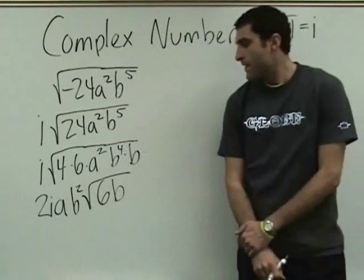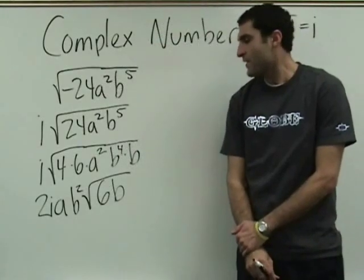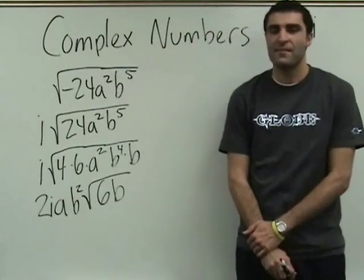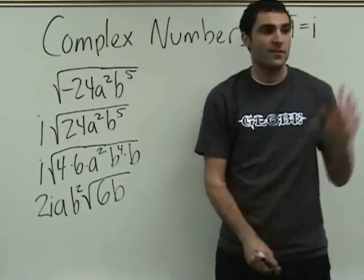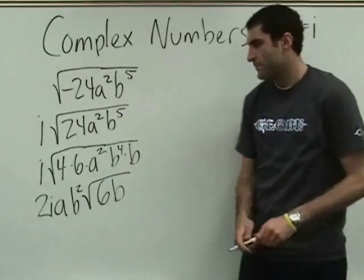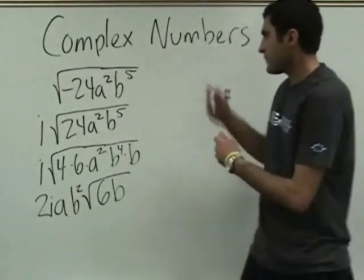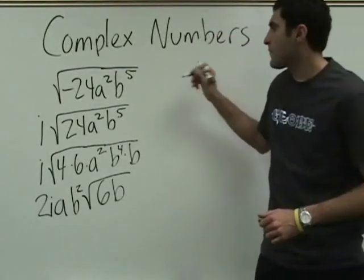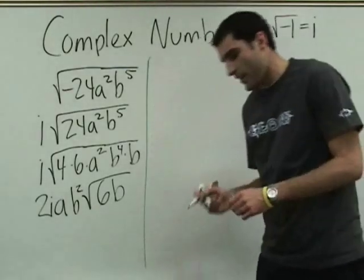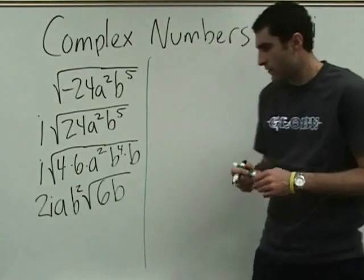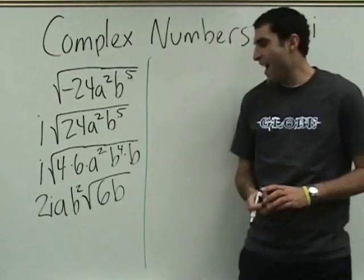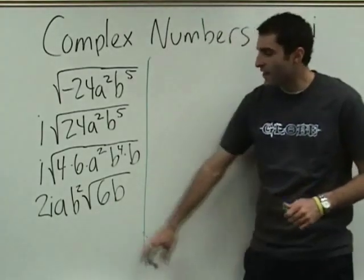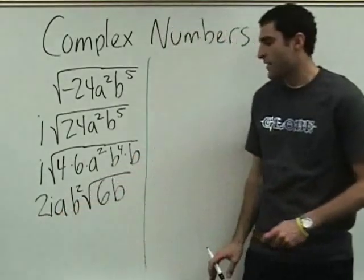And now this b stays inside. Alright. 2iab², square root of 6b. Yes. Okay, that's a mouthful. Does it matter if the i is before the a? It does not matter — it's a product.